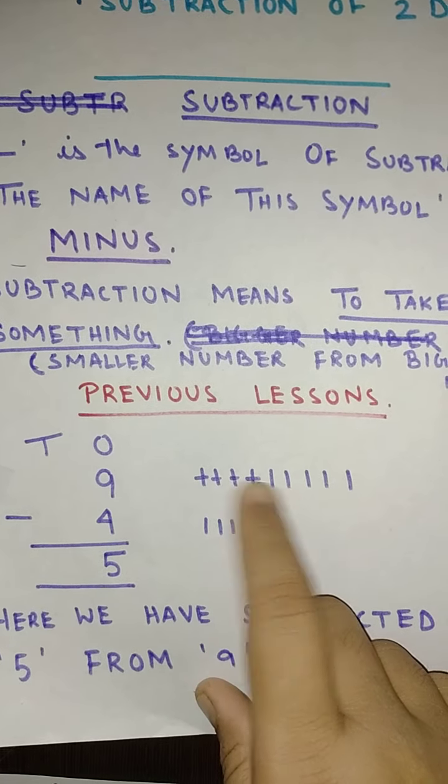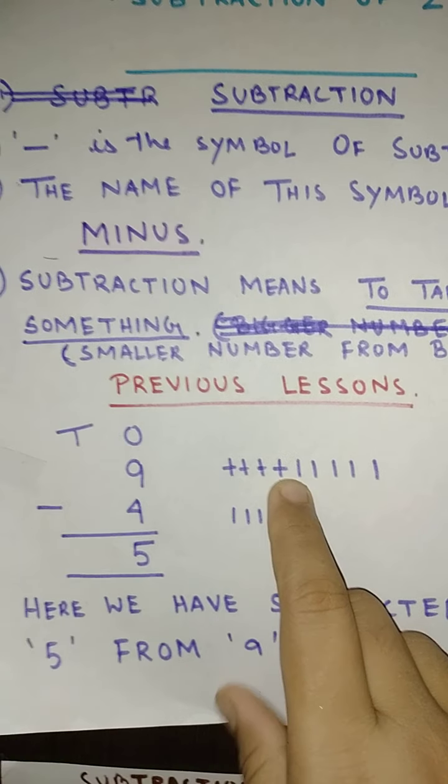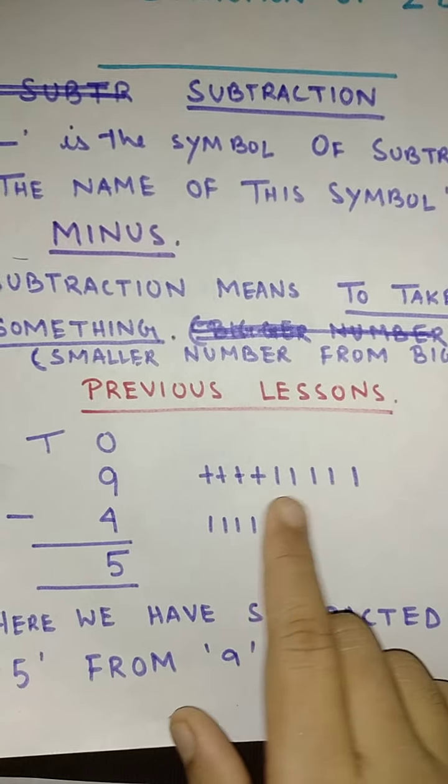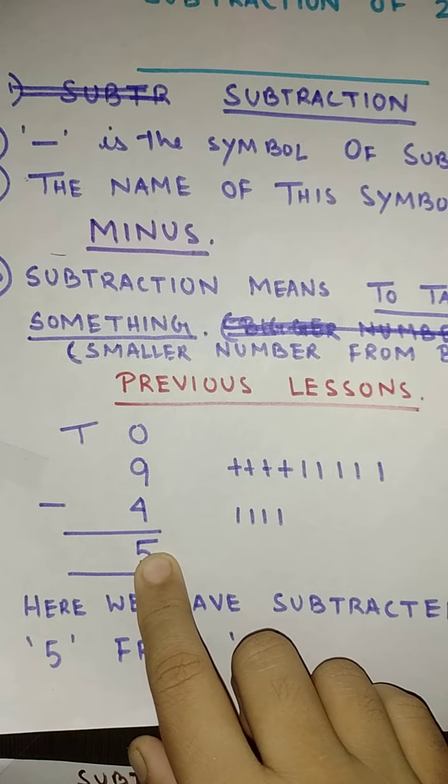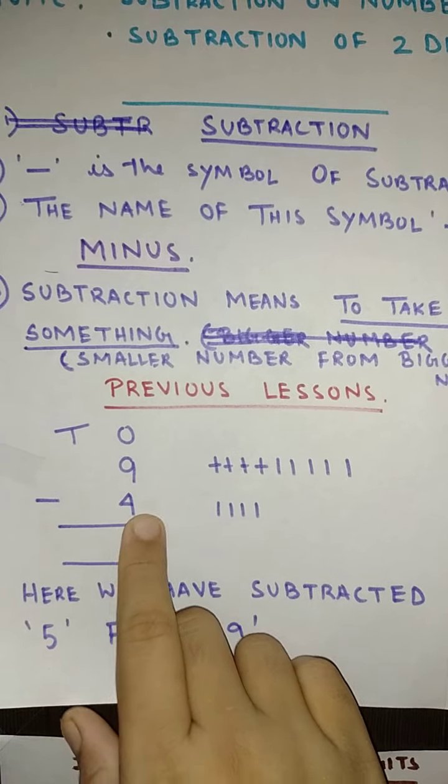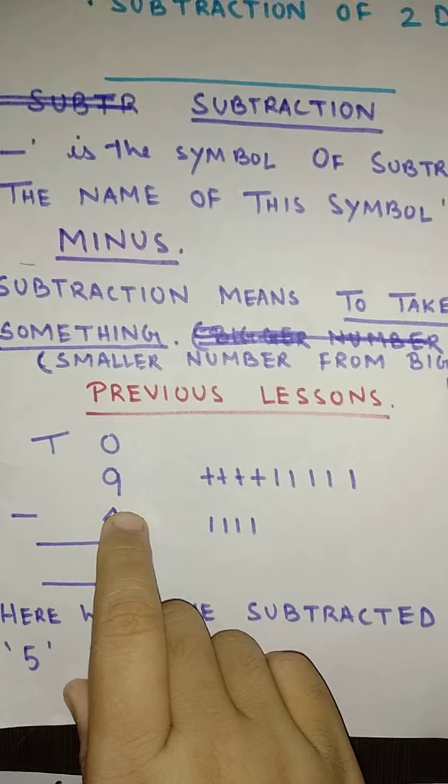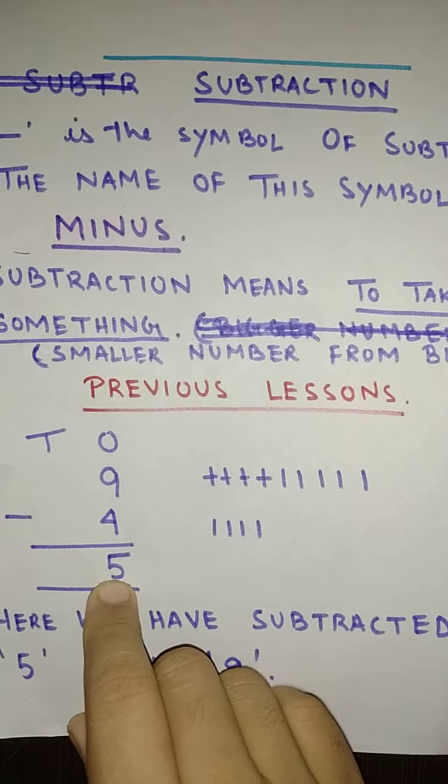And what you have done? 1, 2, 3, 4. In this way you have cut 4 lines. And the remaining 1, 2, 3, 4, 5, five lines are there. So my answer is 5. So what I have done here? Here I have subtracted this 4 from 9 and I got the answer 5.